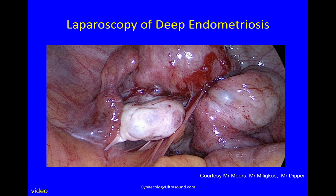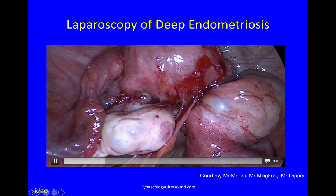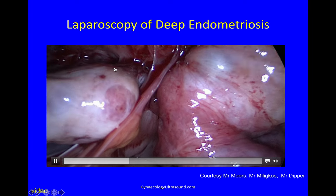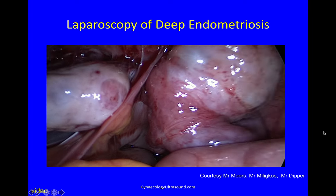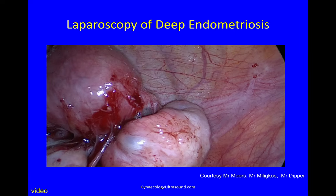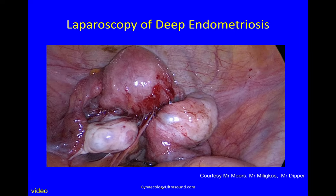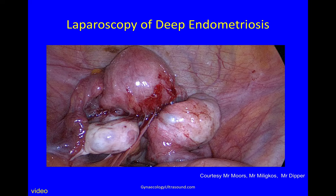Whereas if somebody has severe endometriosis, this is what it can look like. You can see again the back of the uterus and you can see that the ovaries are adherent to the back of the uterus, the bowel is adherent, and there are so many adhesions it's really hard to know what's going on. This should not come as a surprise — this kind of appearance at laparoscopy is entirely predictable by ultrasound. This is what we call a frozen pelvis.